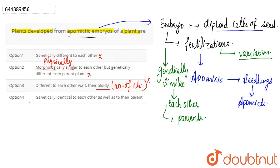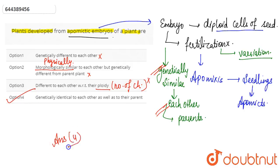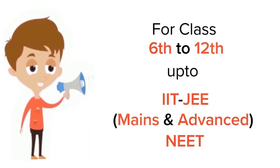Since apomictic embryos are genetically identical, they will also have the same ploidy — the same number of chromosomes. Option 4 states that they are genetically identical to each other as well as to their parents. This is correct, so option 4 is our correct answer.